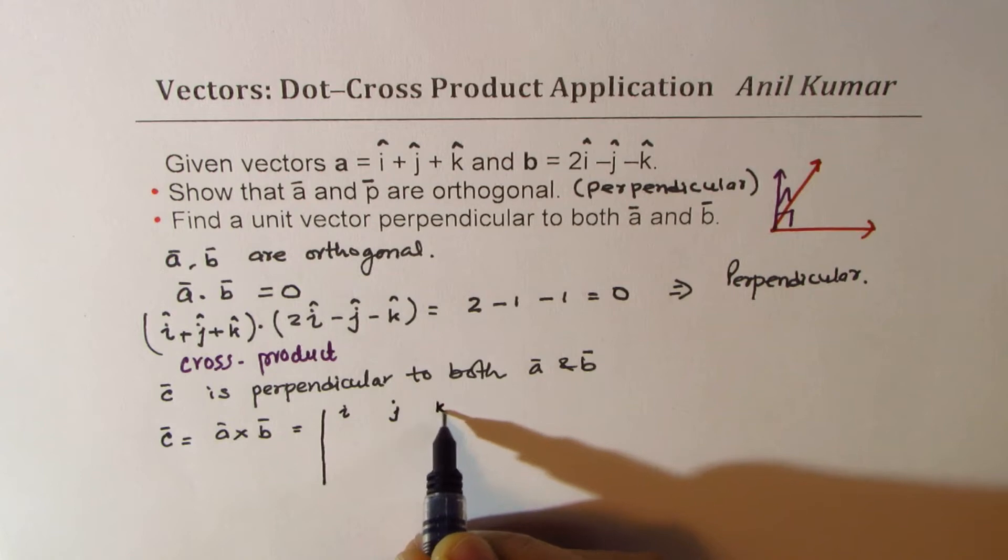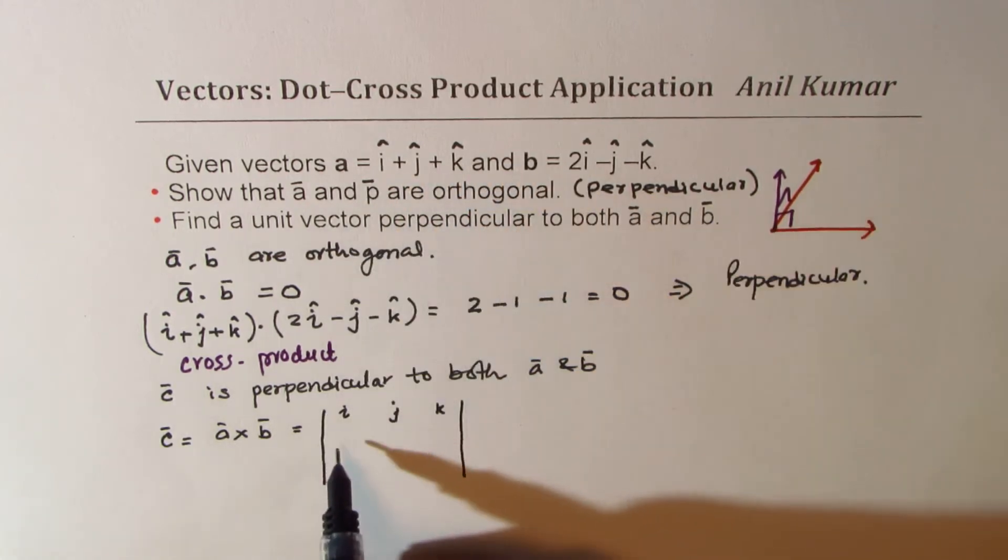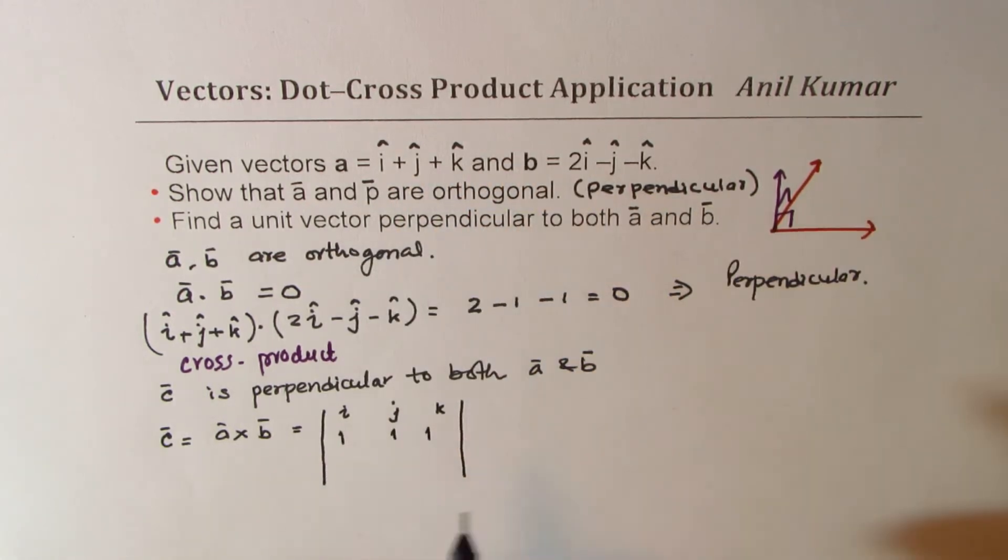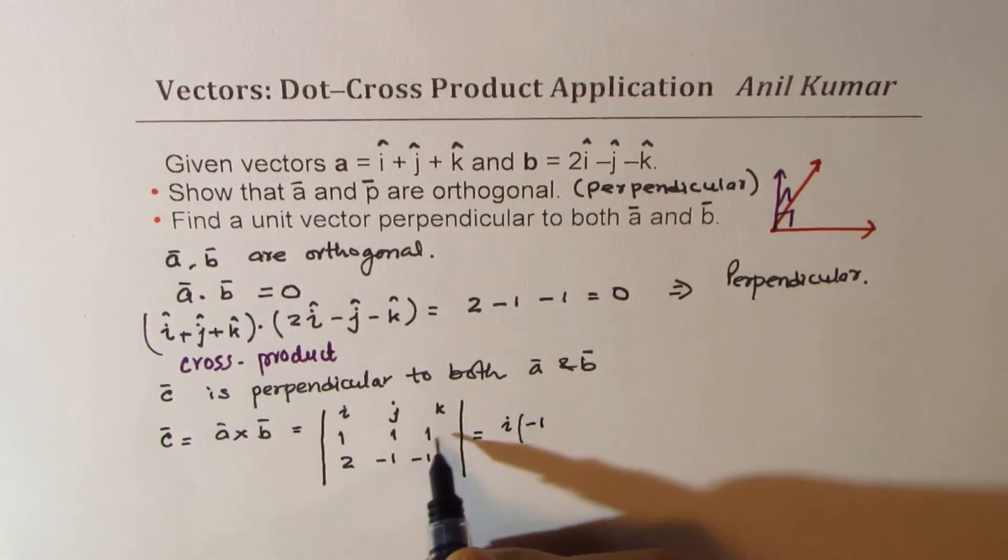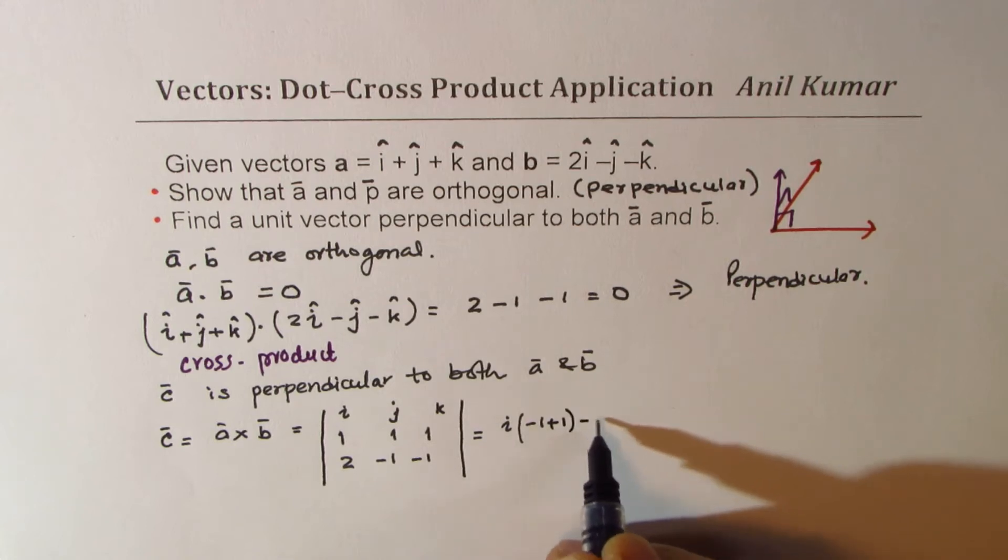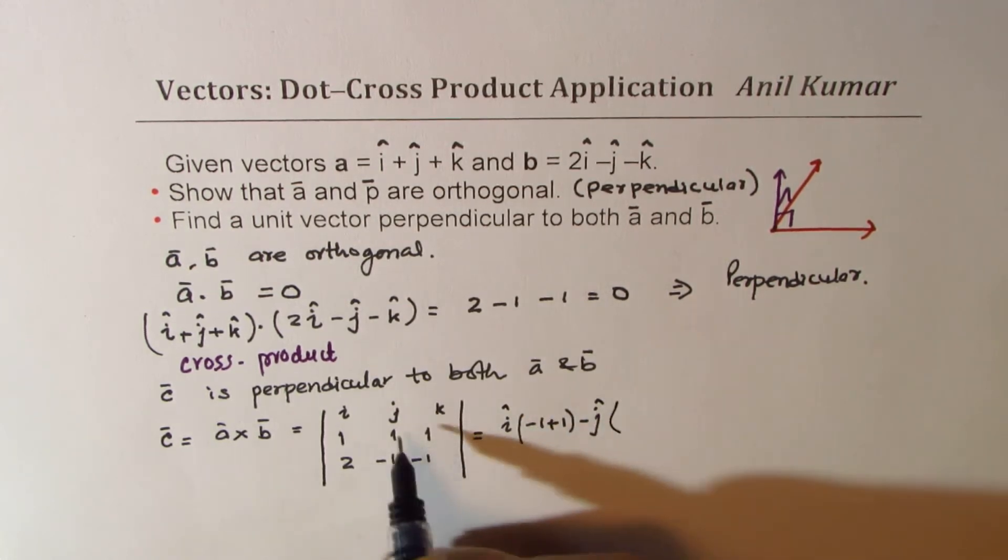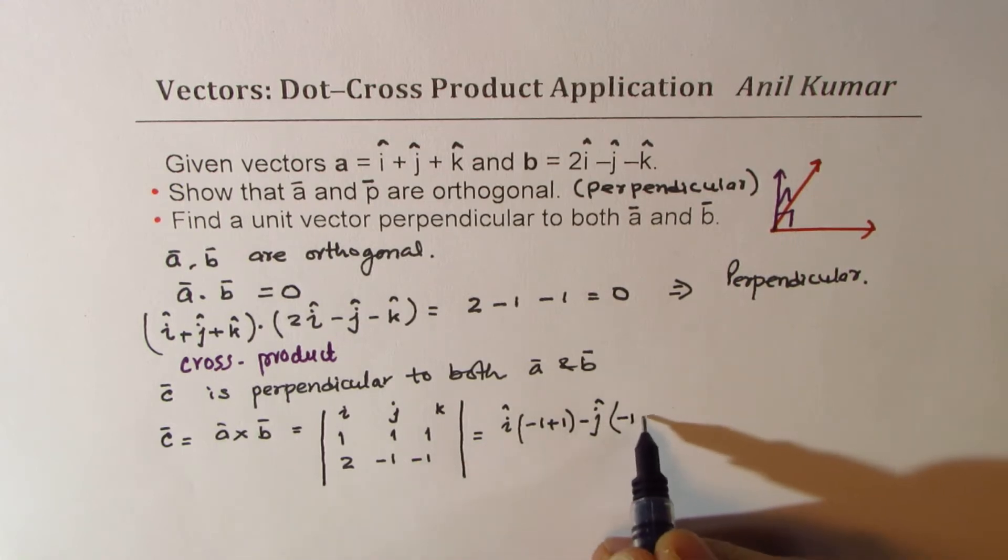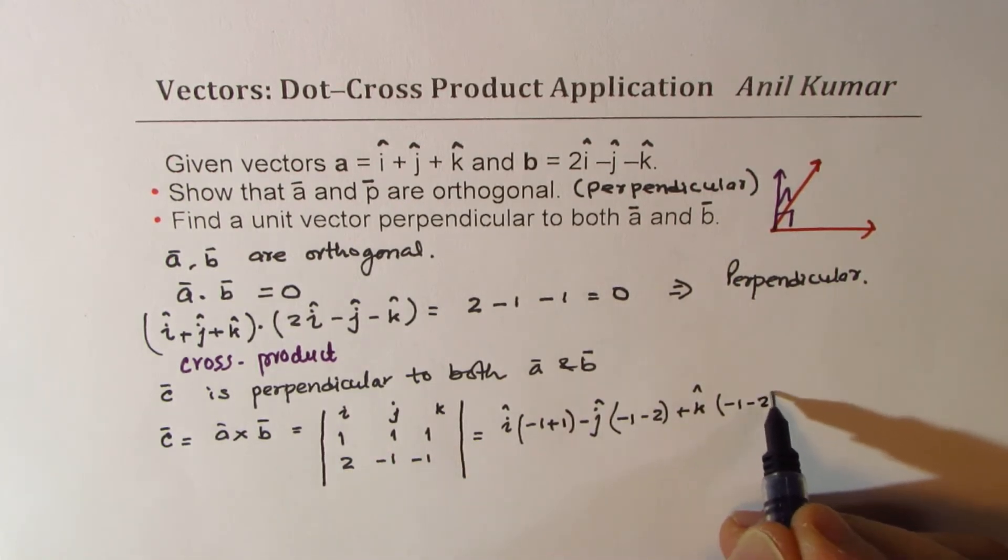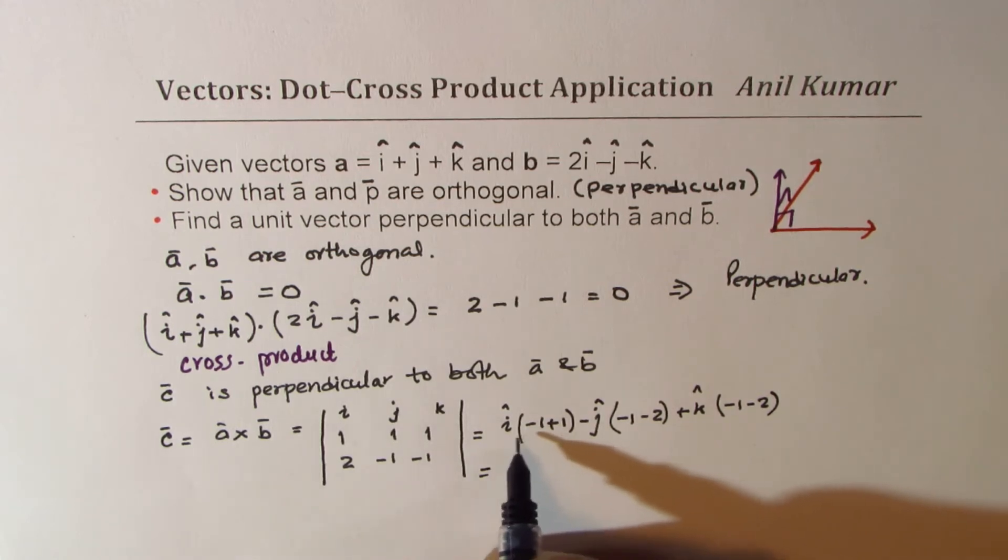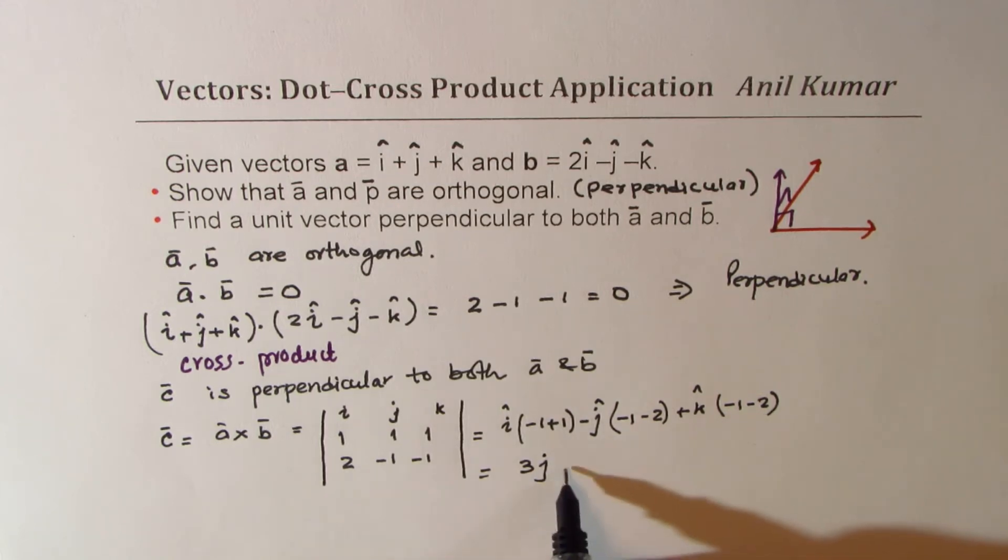So vector c equals a cross b. We write this as i, j, k; 1, 1, 1; 2, -1, -1. That gives you -1 minus of minus gives me plus 1 minus j times (-1 minus 2) plus k times (-1 minus 2). So this is 0, here we get plus 3i plus 3j, and here we get minus 3k.